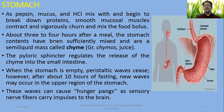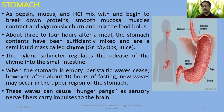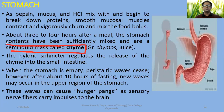Pepsin, mucus, and HCl mix with the food bolus. Smooth mucosal muscles also contract vigorously, churning and mixing the food. After about three to four hours, the stomach contents are sufficiently mixed and form a semi-liquid mass called chyme. This acidic, liquid-like material — chyme — is then released through the pyloric sphincter droplet by droplet into the first part of the small intestine, which is the duodenum.